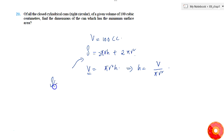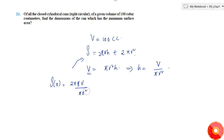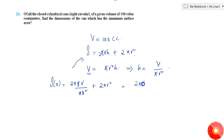Substituting, S = 2πr · (V/(πr²)) + 2πr². Simplifying, π and r cancel, giving S = 2V/r + 2πr².